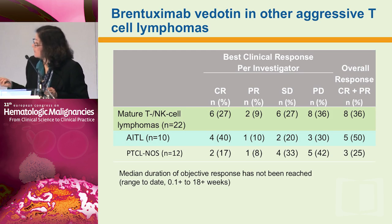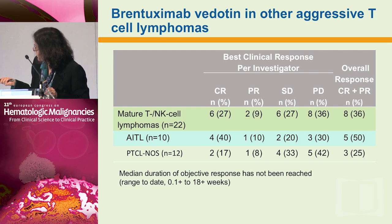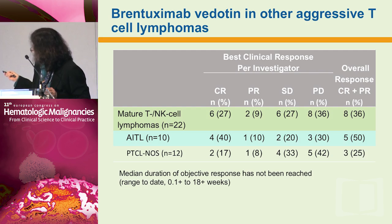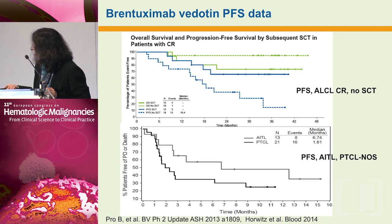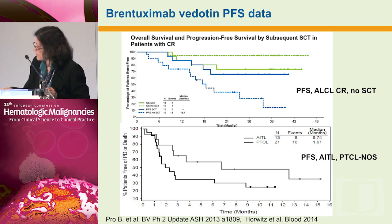Brentuximab vedotin in anaplastic large cell lymphoma is well known, but it has been looked at in other subtypes as well, including angioimmunoblastic, PTCL, and NK patients. The overall response rate was 50% in anaplastic and AITL patients, whereas it was 25% in PTCL. Numbers remain small so we still need larger cohorts to confirm, but it is an agent that can have activity in some of the other subtypes.